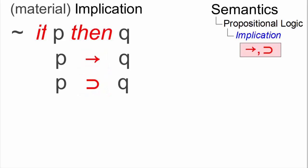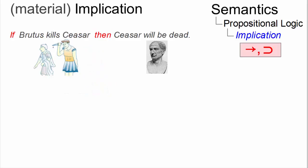Let us look at an example and construct the truth table. If Brutus kills Caesar, then Caesar will be dead.